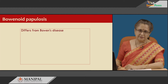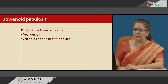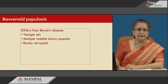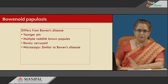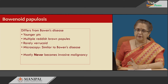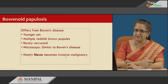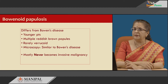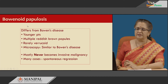Bowenoid papillosis differs from Bowen's disease in that it involves younger patients, and the lesions are multiple papules which are reddish-brown in colour. Rarely they may have an irregular papillary surface, in which case it is called verrucoid. Microscopy, however, is similar to Bowen's disease. Importantly, bowenoid papillosis almost never becomes invasive malignancy, whereas Bowen's disease and erythroplasia of Querat most often become malignant. Many cases of bowenoid papillosis may even spontaneously regress.